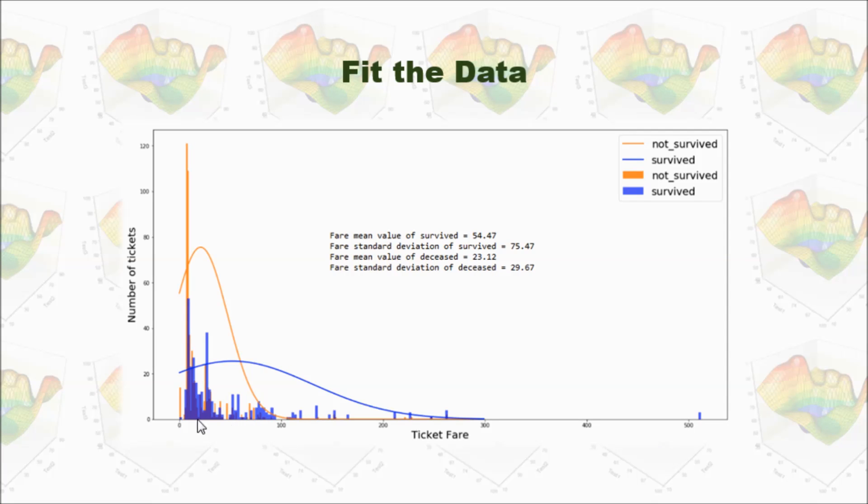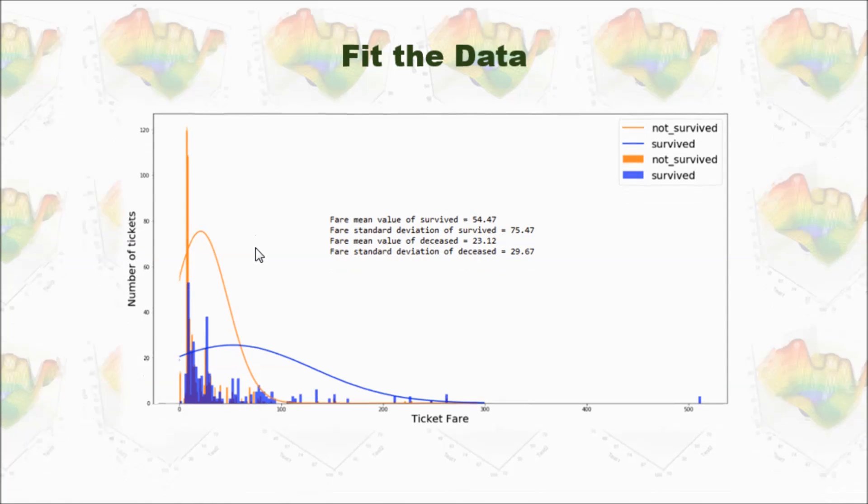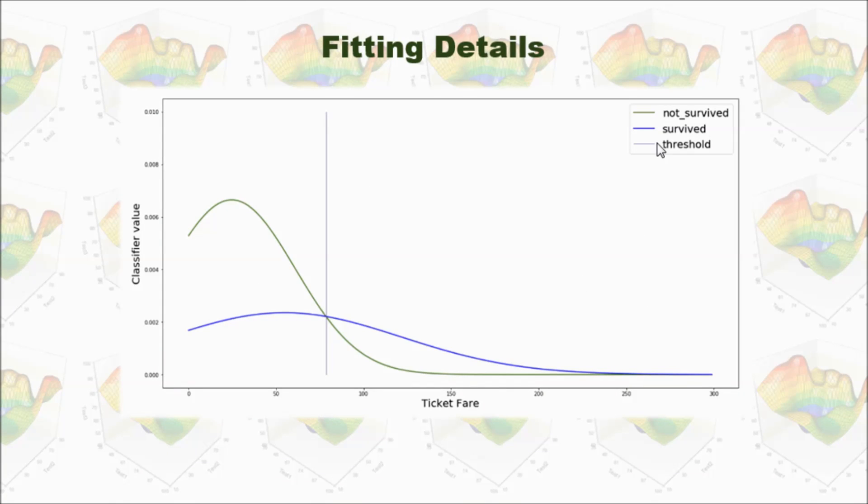If we zoom in this part, we can see, not survived fit this curve, and survived fit this curve. You can see, at this point, if you move to the right, that means if you have higher ticket fare, then most likely you will survive.